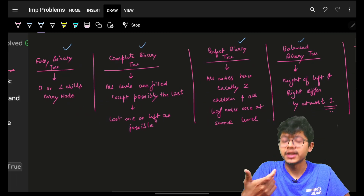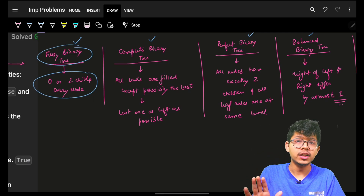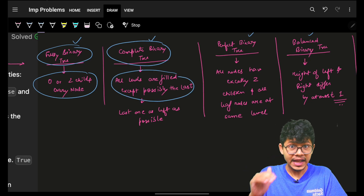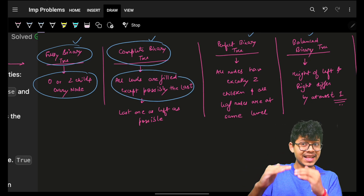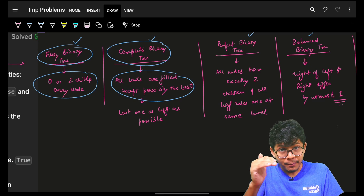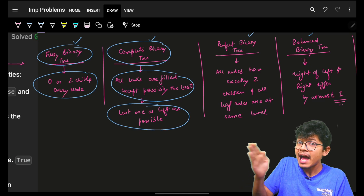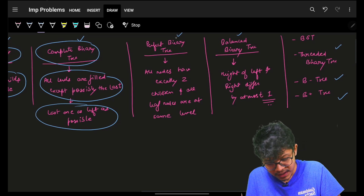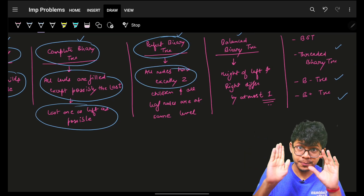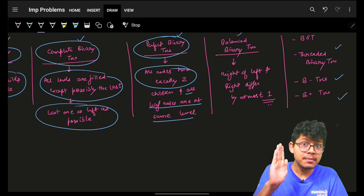A full binary tree is something having zero or two child nodes. A complete binary tree has all levels filled except possibly the last level, which should have all nodes as left as possible. A perfect binary tree always has exactly two children and leaf nodes are all at the same level.